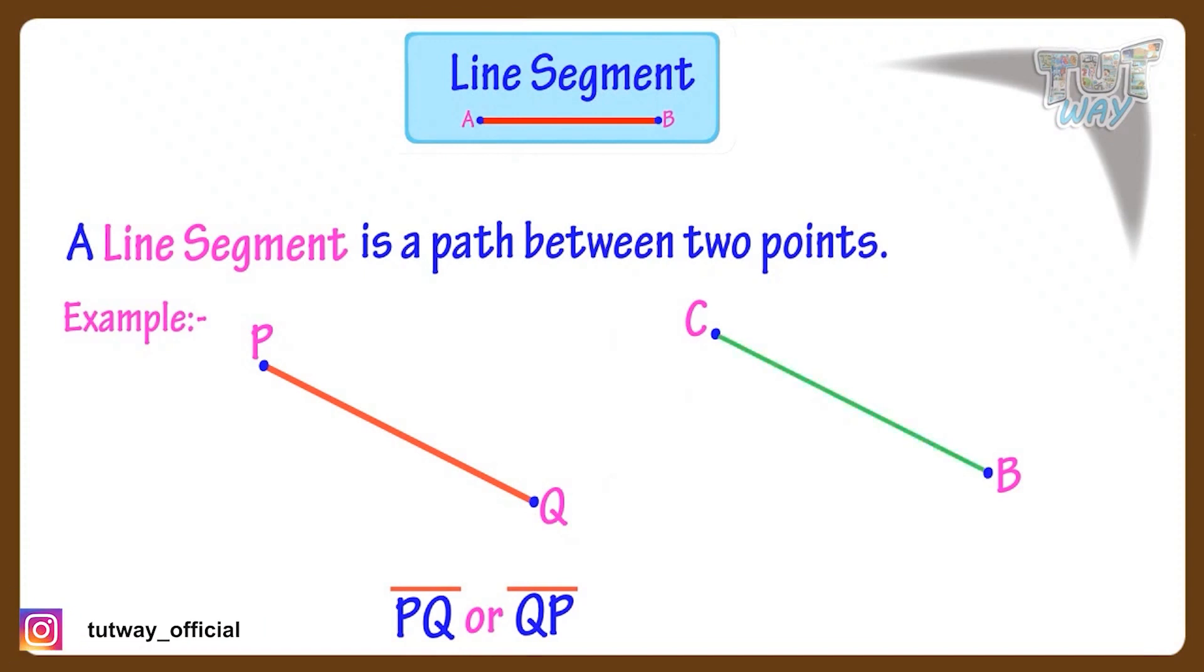Similarly, this line segment will be represented as BC or CB, with a bar above the line denoting that it's a line segment.